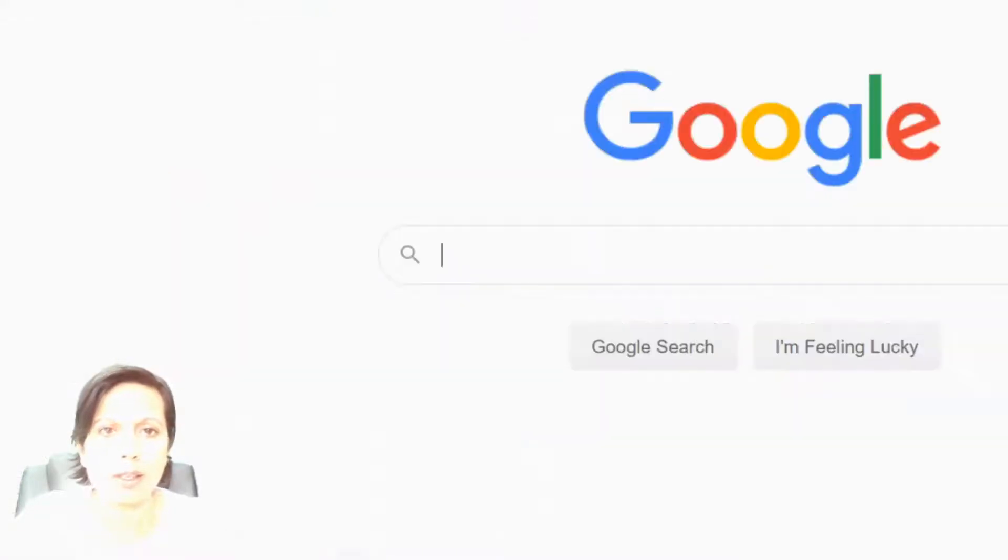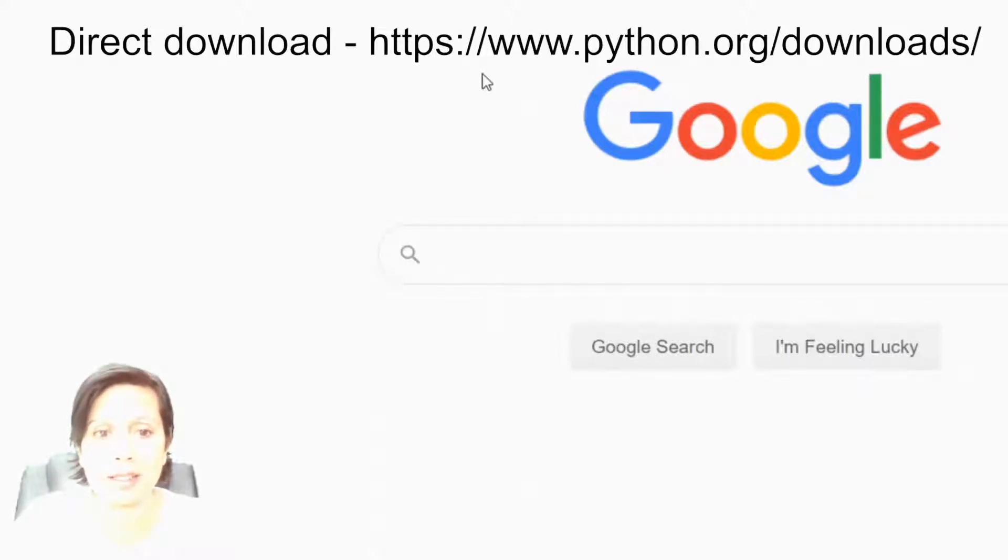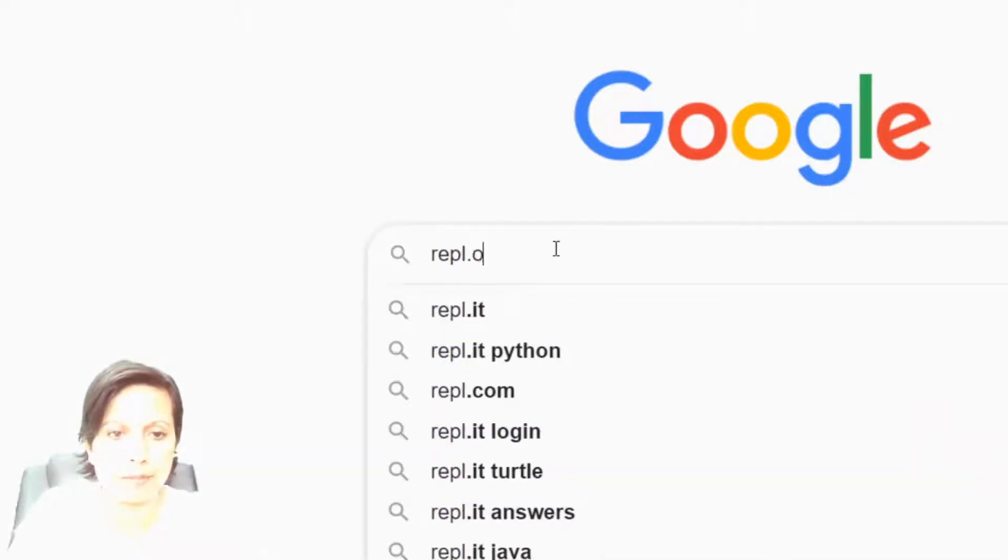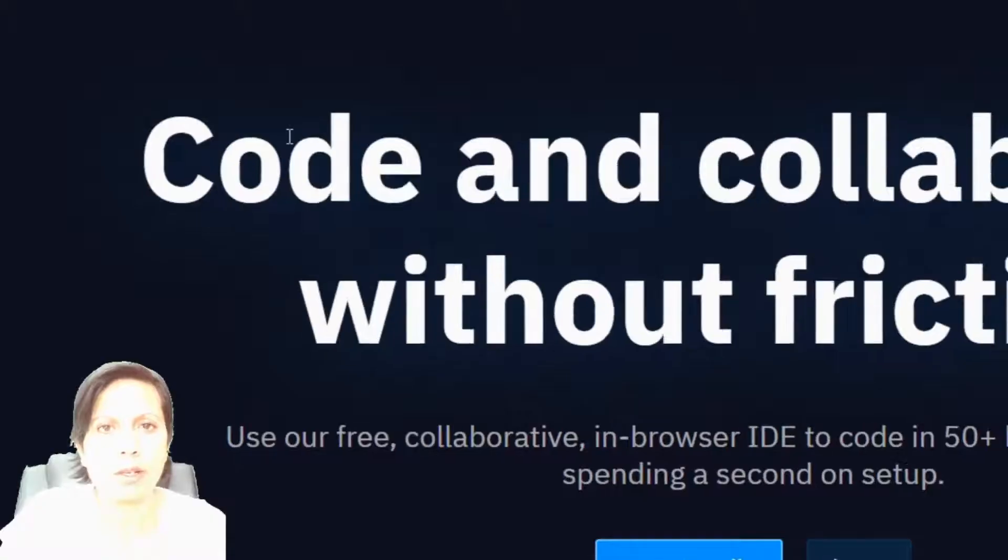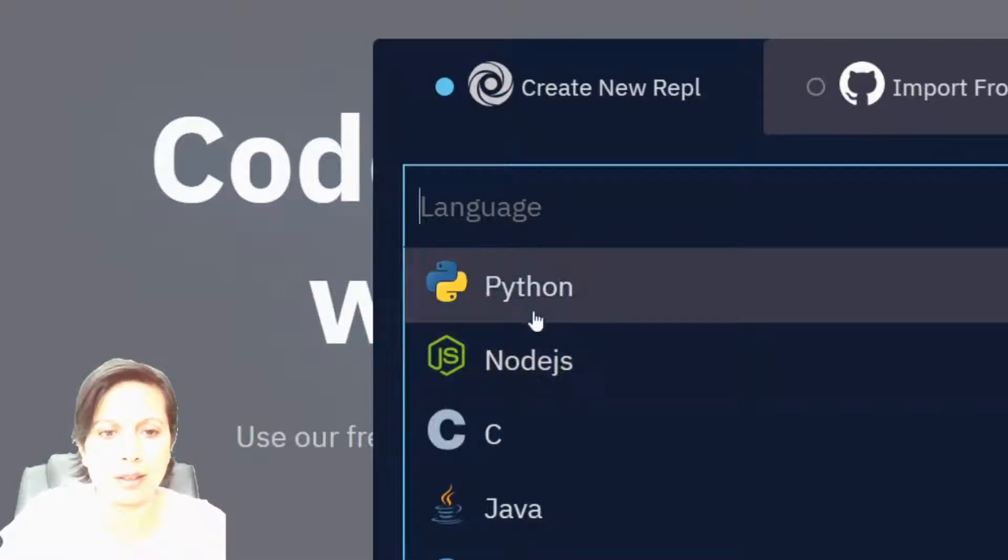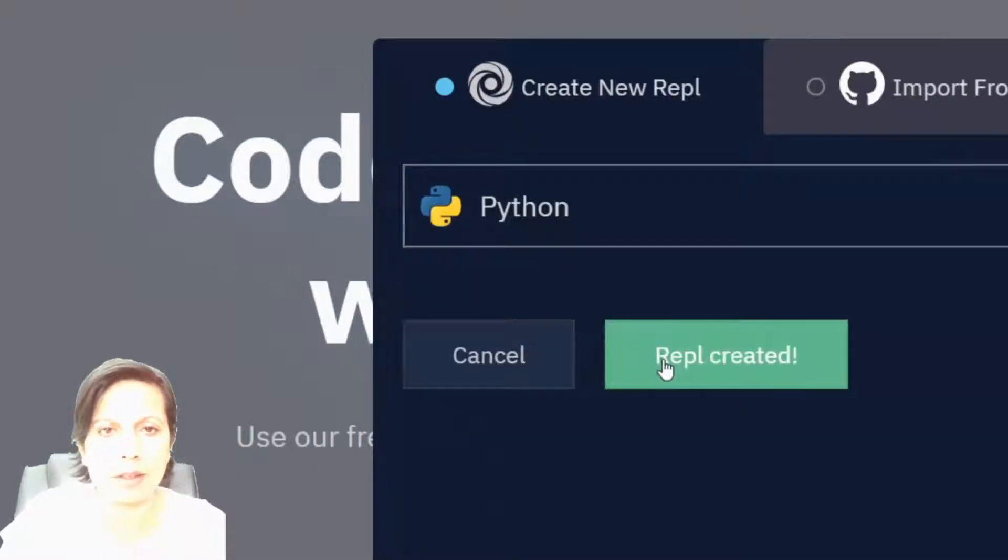So in the browser, we're going to start by using Python in an online IDE, and we're going to use REPLIT. We're going to be using the version 3, so Python 3. So you click on Start Coding and Python, and it should automatically default to the Python 3. Here we are in the IDE.